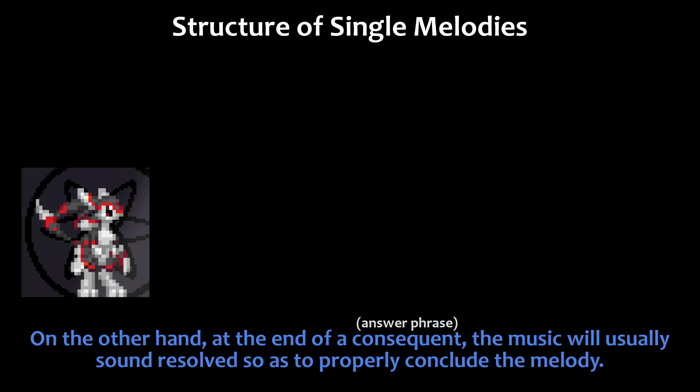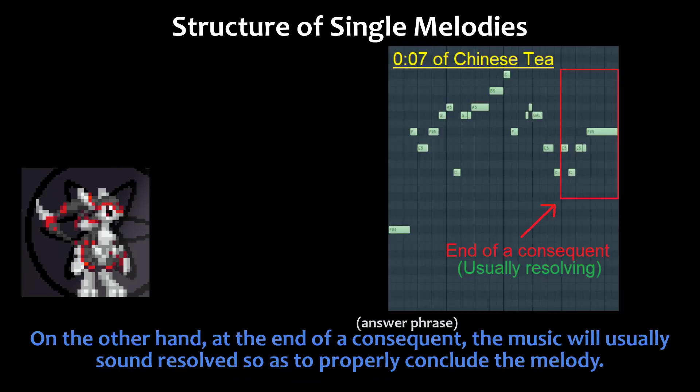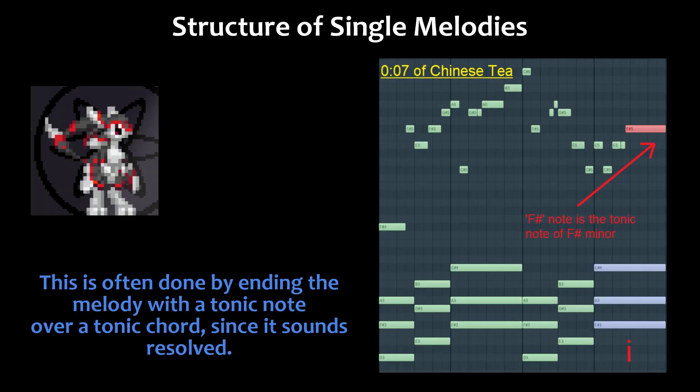On the other hand, at the end of a consequent, the music will usually sound resolved so as to properly conclude the melody. This is often done by ending the melody with a tonic note over a tonic chord, since it sounds resolved.